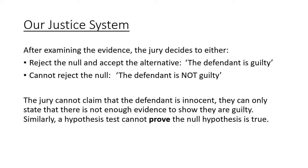After examining the evidence, the jury either rejects the null — they accept the alternative hypothesis, there was enough evidence, and the defendant is guilty — or, if there's not enough evidence, the defendant is not guilty. Notice that the jury never says the defendant is innocent, because the jury can't claim innocence — the only thing the jury is instructed to do is state whether or not there was enough evidence to show guilt. Similarly, when we do hypothesis testing, even if we retain the null hypothesis, that doesn't prove the null hypothesis is true.